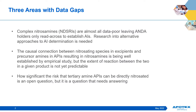Second, I would guess most of the people attending this panel discussion today are aware of the causal connection between nitrosating species in excipients and precursor amines in APIs, resulting in nitrosamines formation in drug products. However, the extent and kinetics of reaction between these two in a given drug product is not yet predictable. This is another area where research could assist with establishing control strategies.